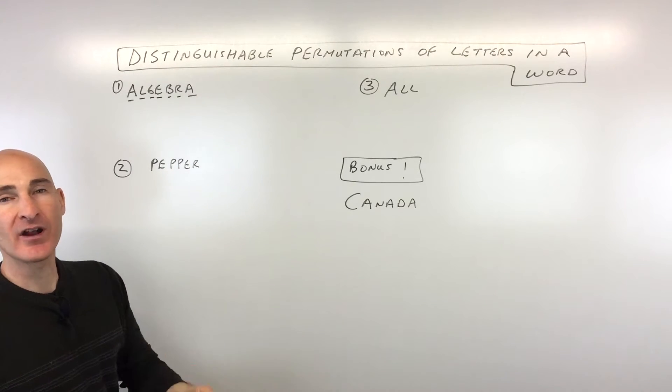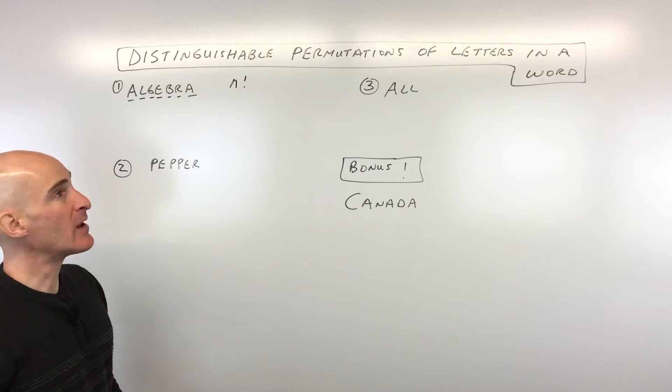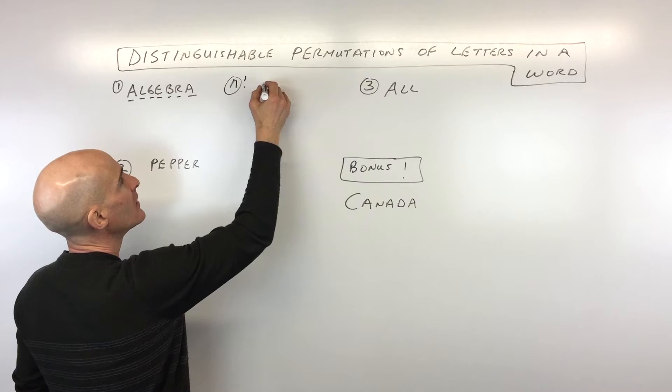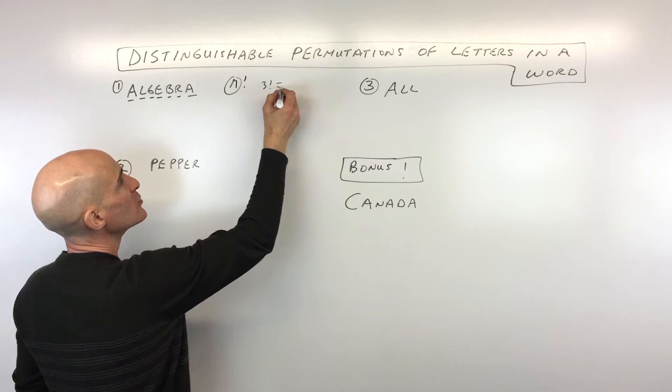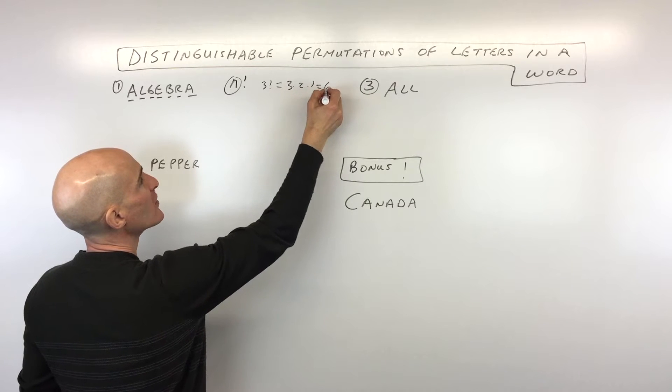Now when you order seven items, you can use this formula n factorial. And what n factorial does is it says whatever this number is, like say for example, if it was like a three factorial, what you do is you take that number three and then you multiply down to one. So three times two times one, that's six.